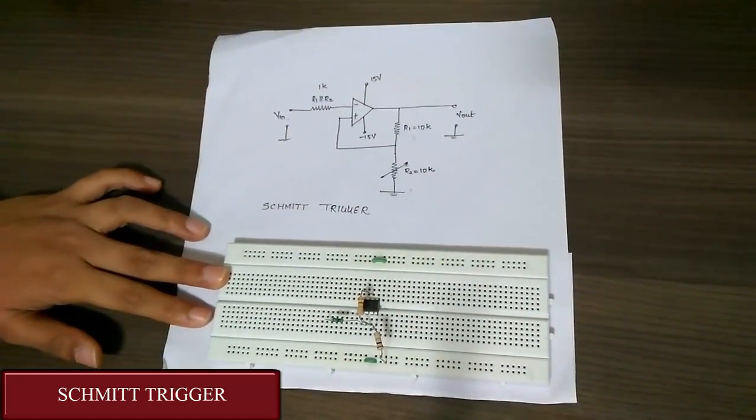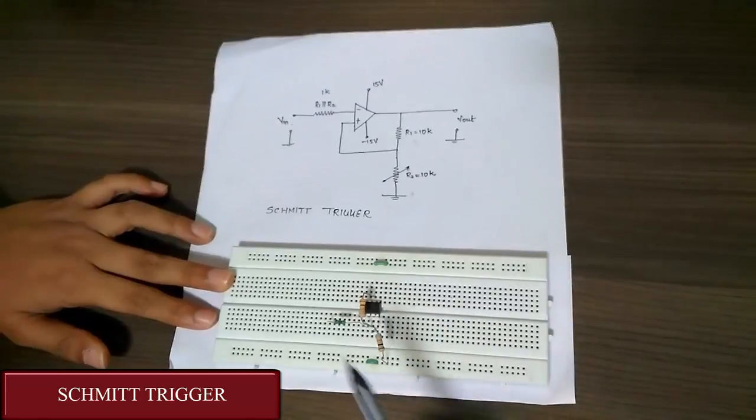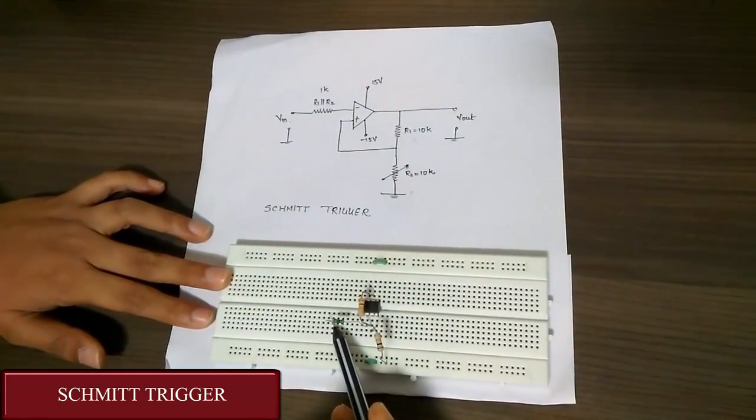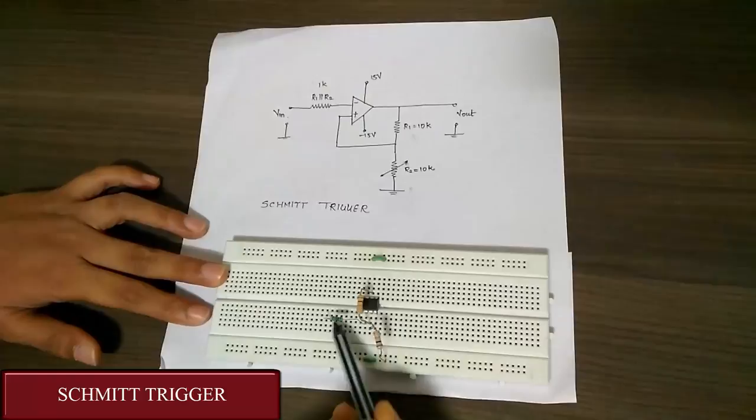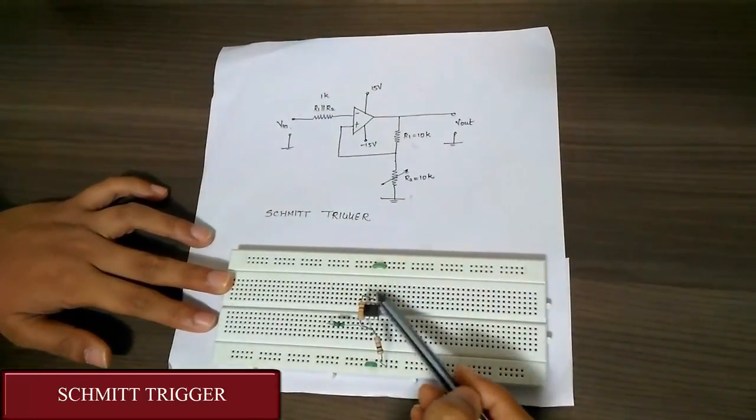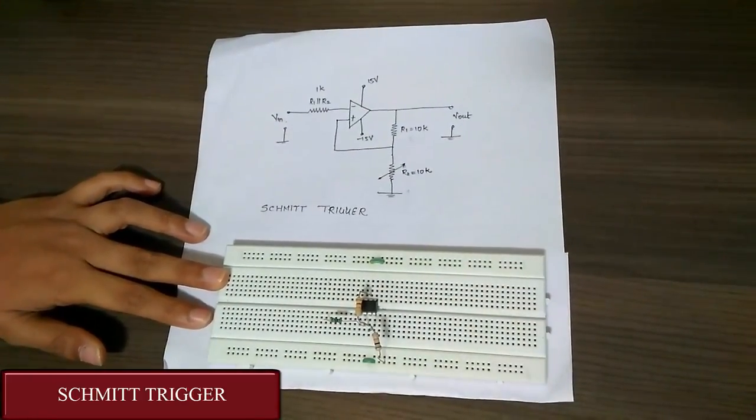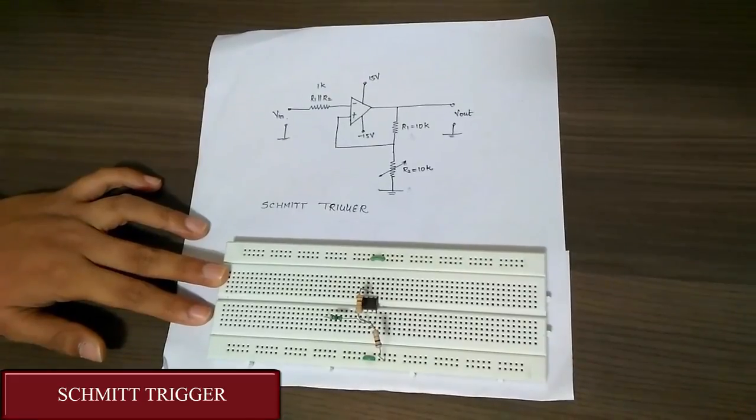And we are giving input at this terminal of the resistor, and we are getting the output at the sixth pin of the IC. That's it for Schmitt trigger. Now, let's see its implementation.